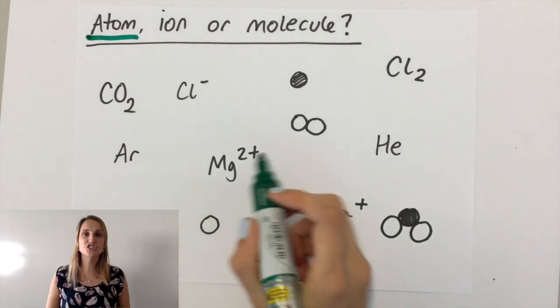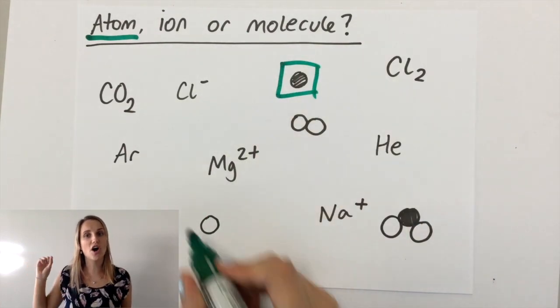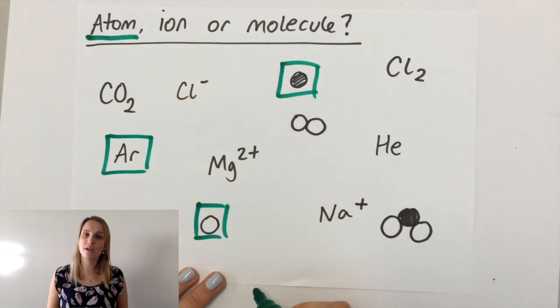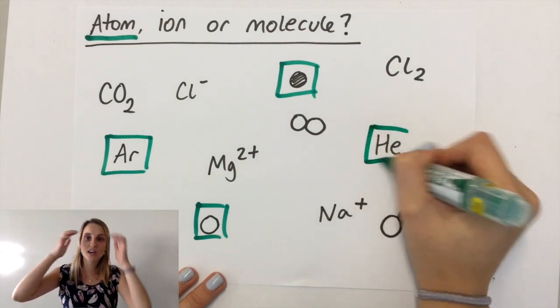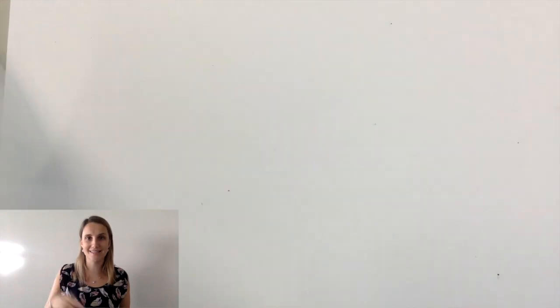You can see there's two that are displayed with the chemical symbols. You've got Ar and He, but also in terms of drawings I've got two circles that are just on their own and one circle means just one atom.